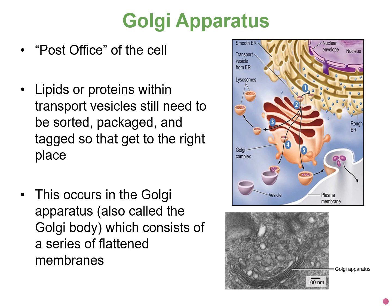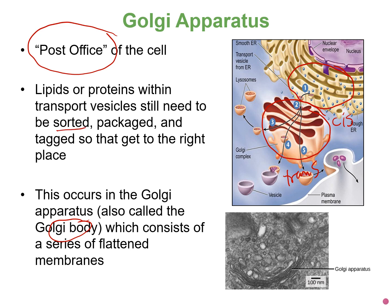Proteins produced and sometimes modified by the rough ER need to travel to the Golgi next if they're going to be secreted or exported from the cell. They enter from the cis side of the Golgi and exit through the trans side. The Golgi apparatus — sometimes called the Golgi body — is like the post office of the cell: it sorts, packages, and adds address tags to proteins so they reach the correct destination.